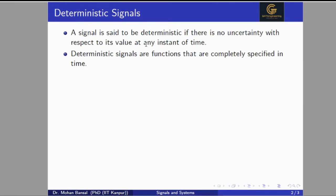So what is a deterministic signal? A signal is said to be deterministic if there is no uncertainty with respect to its value at any time instant. A signal will be called deterministic if we can predict it in advance — there is no uncertainty, so there is some specific value at that instant of time. Deterministic signals are functions that are completely specified in time. For the whole time period, signals should be defined mathematically.